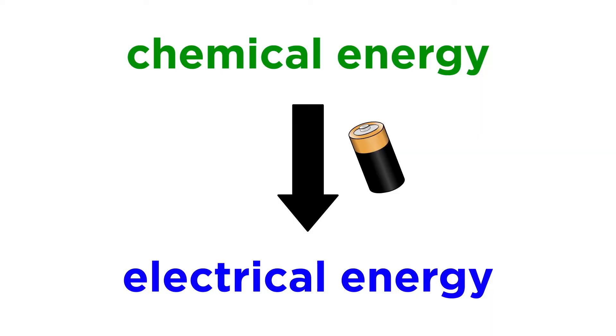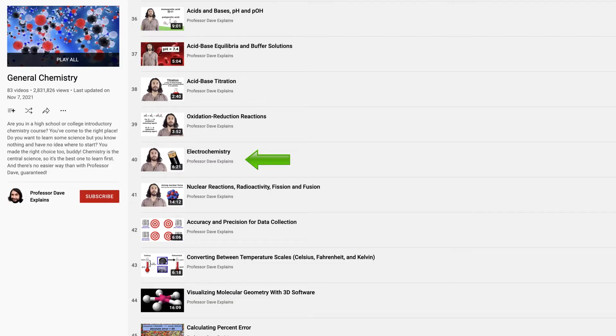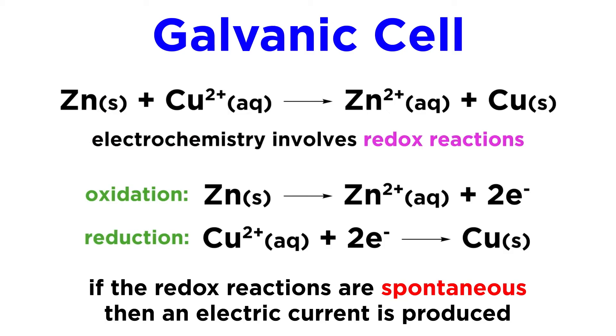A battery works by converting chemical energy into electrical energy, and this is covered in a branch of chemistry we call electrochemistry. In the case of a type of electrochemical cell called a galvanic cell, the production of electricity is achieved by a spontaneous oxidation-reduction reaction, or a redox reaction.